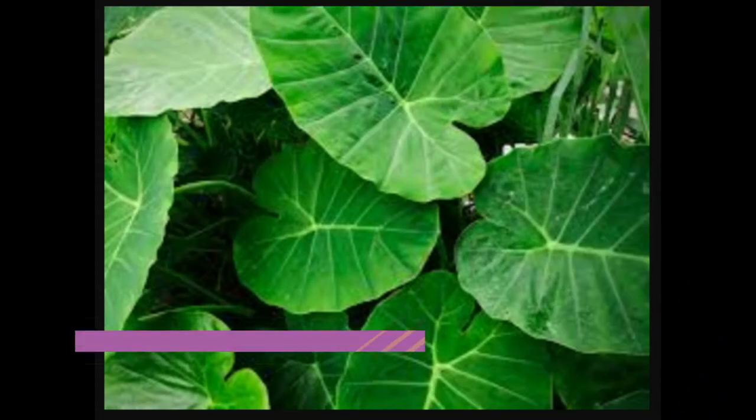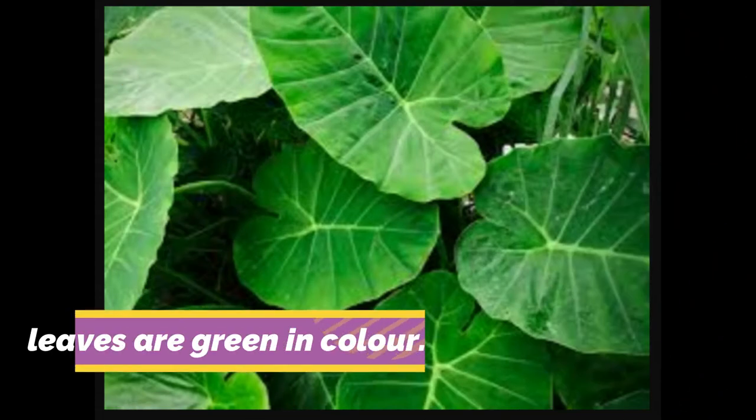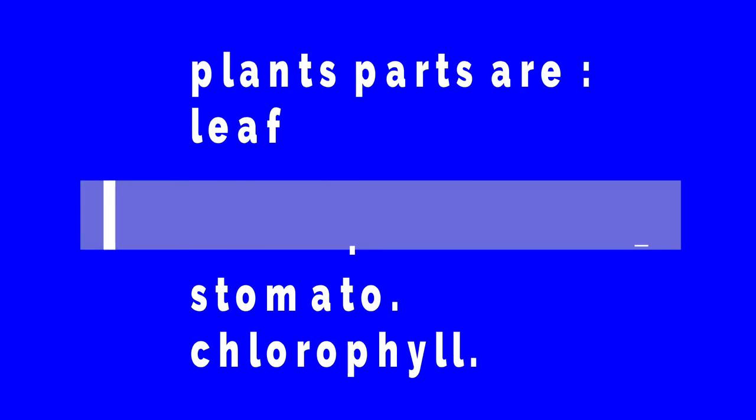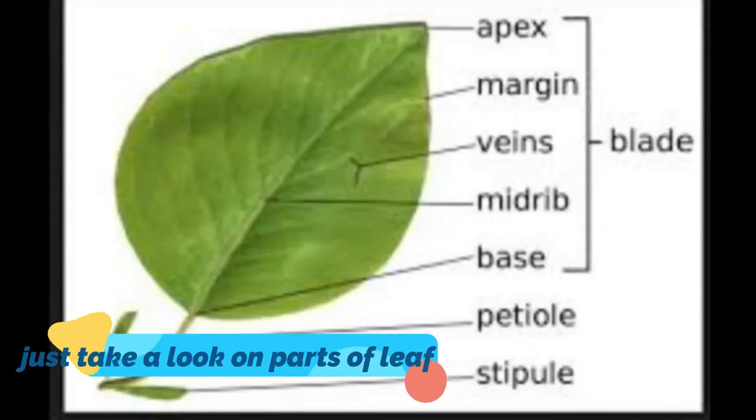Now let's move on to leaves of plants and their functions. Leaves are always green because they contain chlorophyll. Parts of a plant leaf include the leaf blade, veins, midrib, stomata, and chlorophyll.